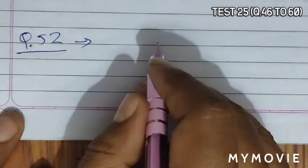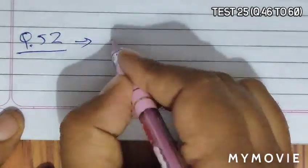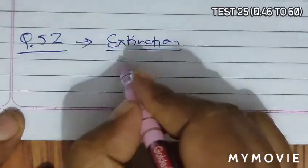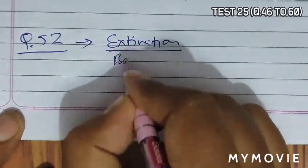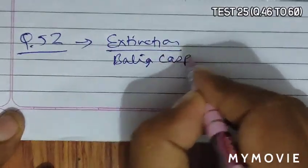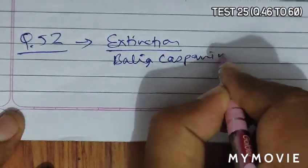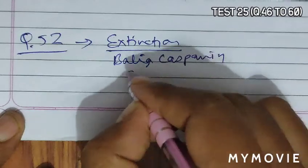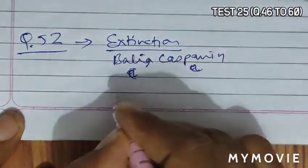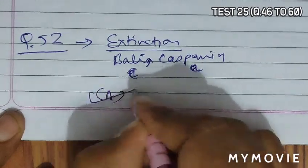Question 52 asks that extinct subspecies of tiger are. So extinct subspecies of tiger are Bali, Javan and Caspian. Now Bali and Caspian are given in options A and C. So option A becomes the correct answer.